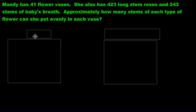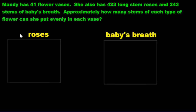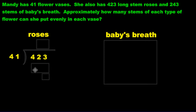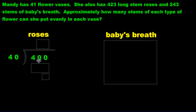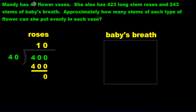So what I recommend is splitting up these categories. For the roses, we've got 423 of them and we want to divide among 41 vases: 423 divided by 41, but we need to estimate. Using front end estimation, 423 becomes 400 and 41 becomes 40. We change both — keep the first digit. 40 goes into 400 — that's easy — 10 times. 10 times 40 makes 400. So about 10 roses can go inside each vase.